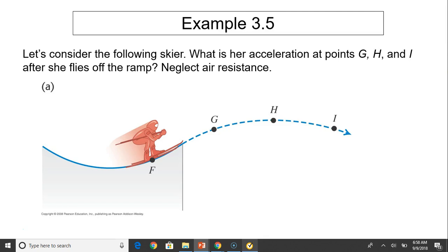Here is an example. Let's consider the following skier. What is her acceleration at points G, H, and I after she flies off the ramp? When she flies off the ramp, she's in air. If we ignore air resistance, that means she's in free fall.